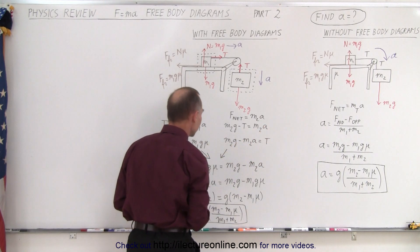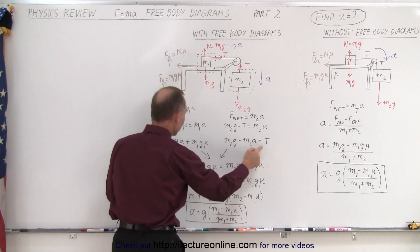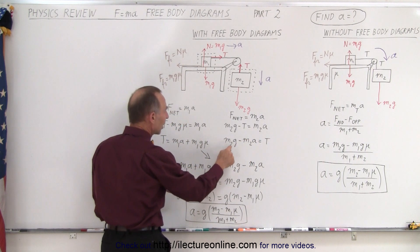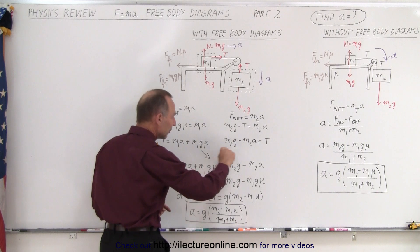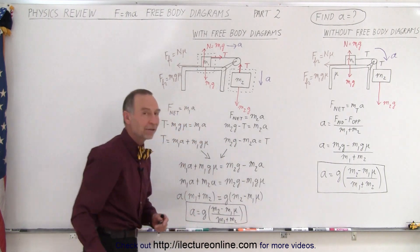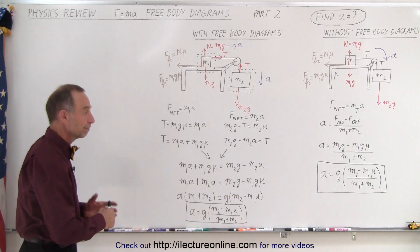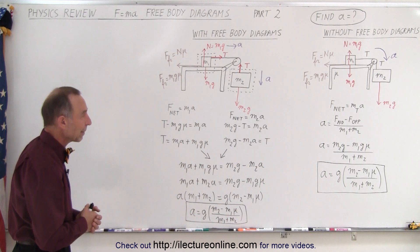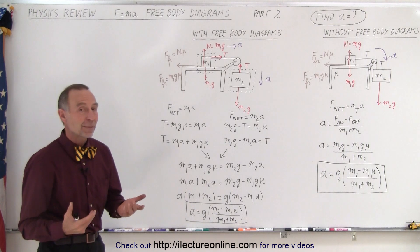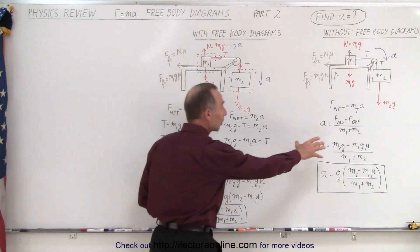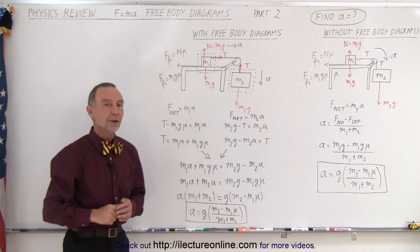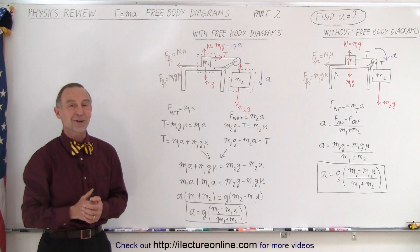Now we can set the two equations equal to each other since this T equals that T. So M1·A plus M1·g·mu equals M2·g minus M2·A. Solving algebraically for A, we get the exact same answer. It takes a little bit more work, but you end up with the correct same answer. So if you don't need to use free body diagrams, the whole-system method is much easier and quicker. If you need to use free body diagrams, then this is the way you want to do it. And that is how it's done.